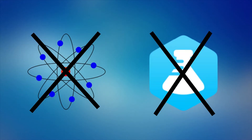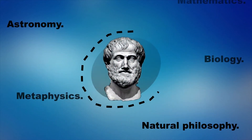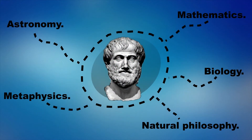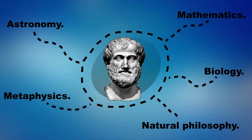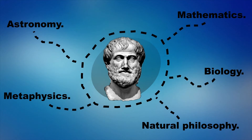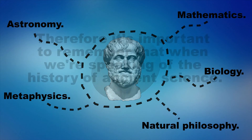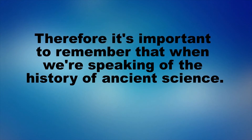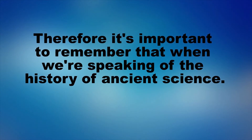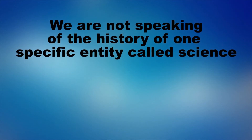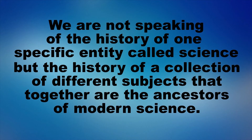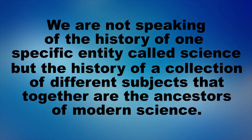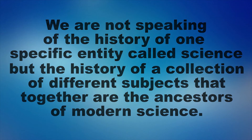Many of the scientific disciplines we think of today, like physics and chemistry, did not exist in the ancient world. Moreover, until Aristotle, we don't have any theoretical framework tying all aspects of nature together, or any standardized methods for how the different aspects of nature are to be studied. Therefore it's important to remember that when we're speaking of the history of ancient science, we are not speaking of the history of one specific entity called science, but rather the history of a collection of different subjects that together are the ancestors of modern science.